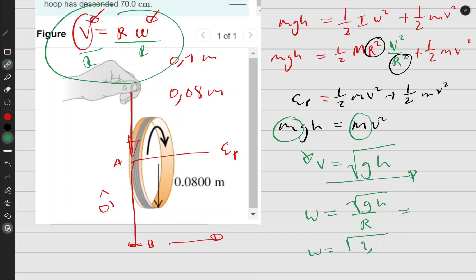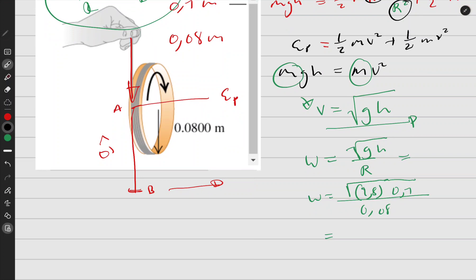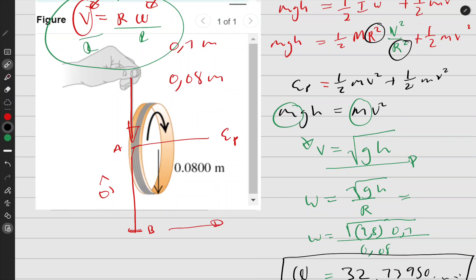Let's calculate: square root of (g=9.8 times h=0.7) all over R=0.08. Punch this in your calculator. The answer was 32.7950 radians per second, depending on the significant figures you're required to represent.